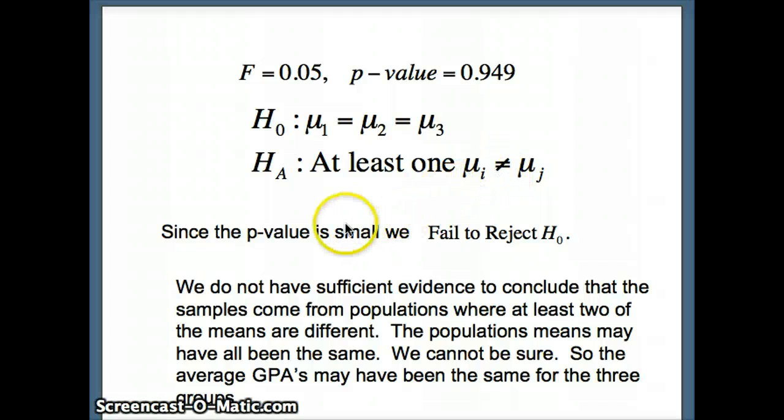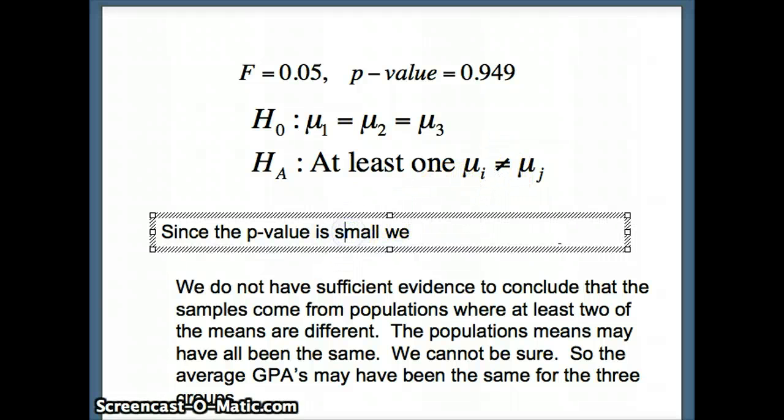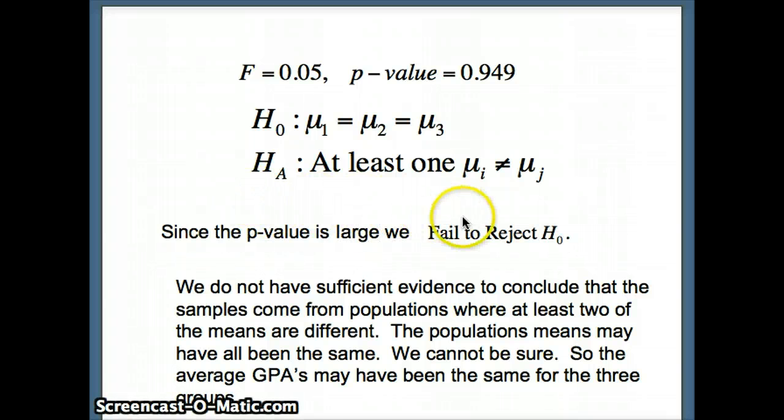Well, this time we have a large P value. So we'll go ahead and change that. Since the P value is large, we fail to reject H naught. Notice 0.949 is about as large as we can get. What will our conclusion be? We're going to say we do not have sufficient evidence to conclude that the samples come from populations where at least two of the means are different. The population means may have all been the same.